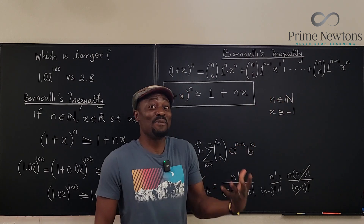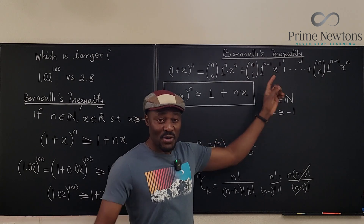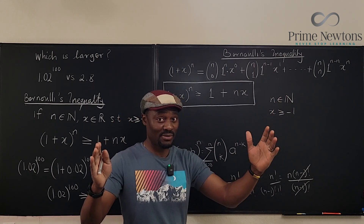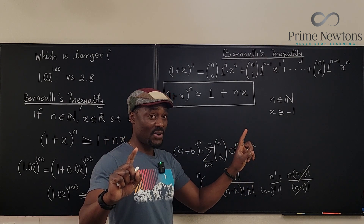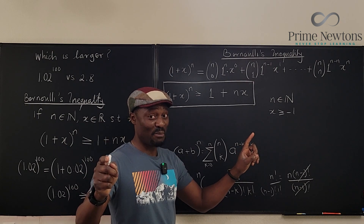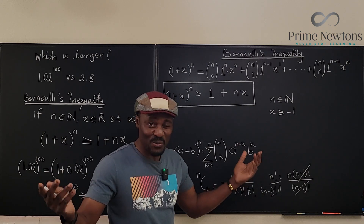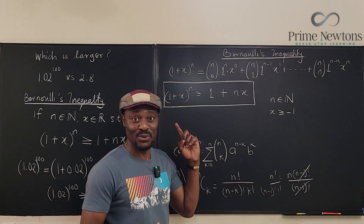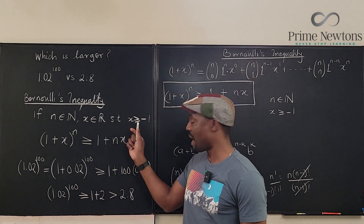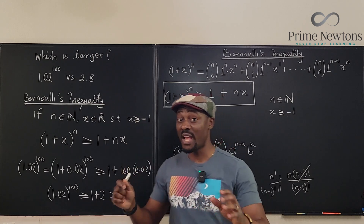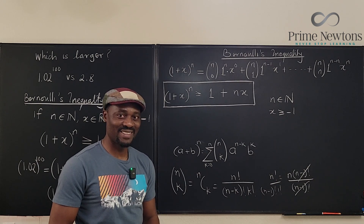You may wonder what happens if x is negative. That actually makes things nicer — when you expand a binomial with a negative x, the coefficients mean that positive terms always dominate the negative terms. As long as x stays within the boundary of x greater than or equal to negative 1, everything works out. Never stop learning, never stop living — bye-bye!